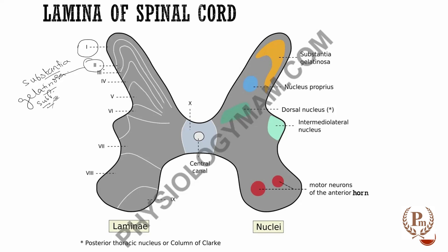Next, lamina three and four — we call this the nucleus proprius. The nucleus proprius receives input fibers that convey proprioception and light touch. So it is basically involved in touch and proprioception. The fibers bringing touch and proprioception sensations go to this nucleus proprius.